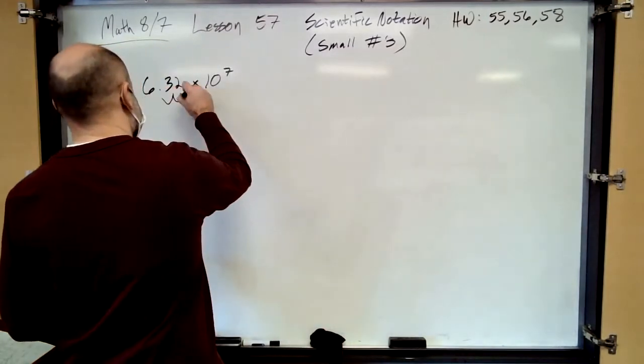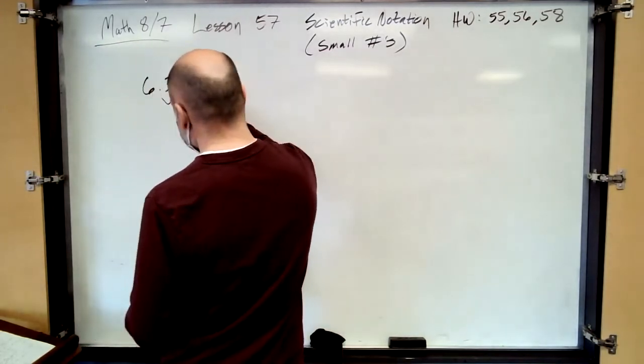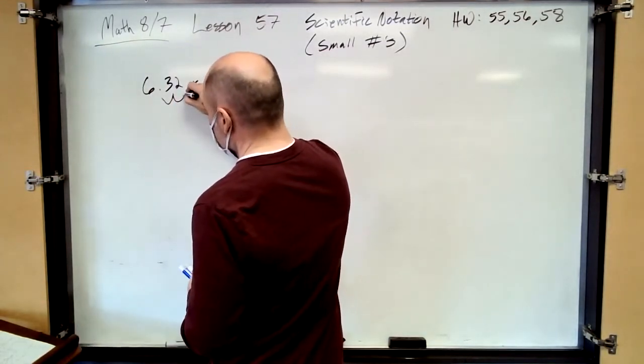So, 1, 2, uh-oh. We ran out of digits. What do we do? A zero. So, how many zeros? It's 5.